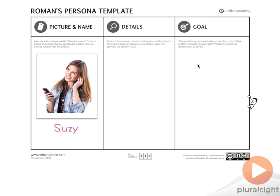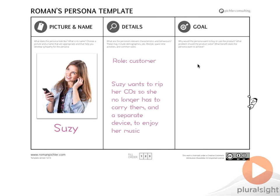Next we move on to the details. For this particular case we'll keep our persona light — the details will include only a role and a description. The role is 'customer,' which represents the role this persona has inside the system, and the description represents what we want this persona to do. In this case, Susie wants to rip her CDs so she no longer has to carry them or a separate device to enjoy her music.